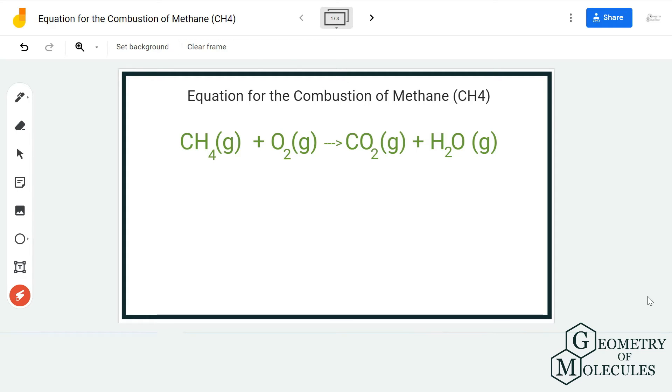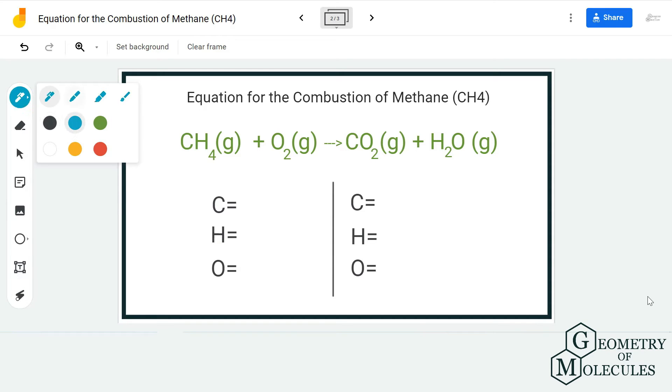We have CH4 and O2 on the reactant side and CO2 and H2O on the product side. To balance this equation, we first always count the number of atoms on both reactant and product sides.